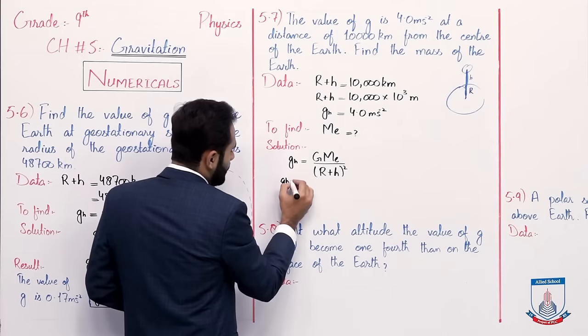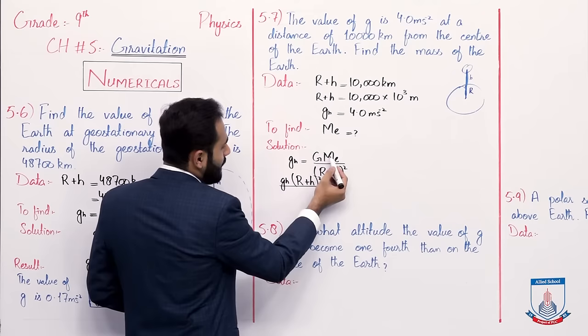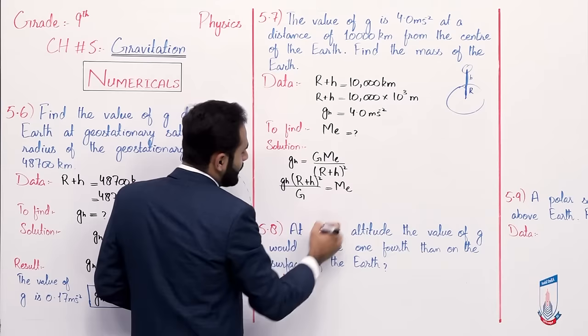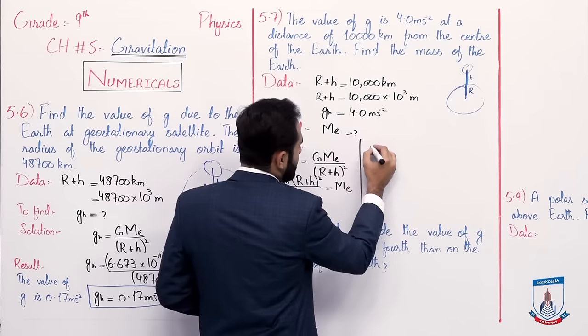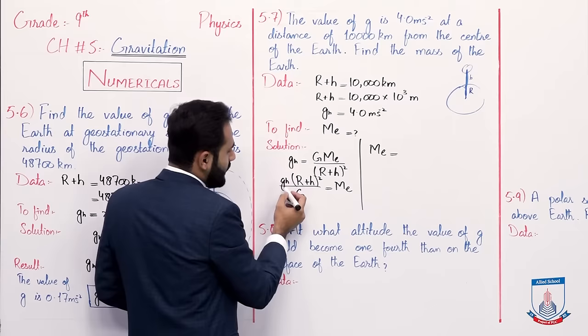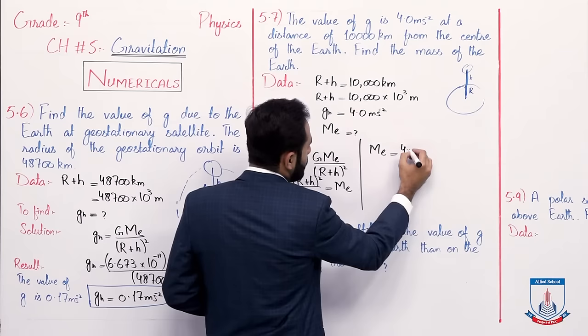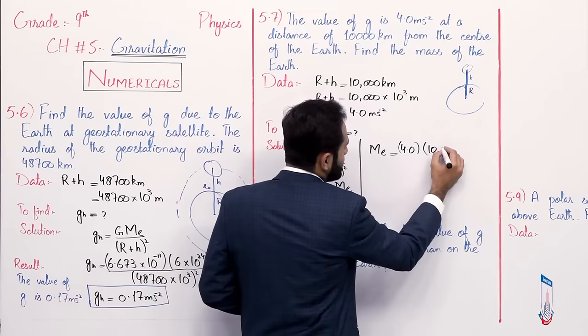g_h multiplied by (r plus h) whole squared, divided by G, gives mass of Earth. Mass of Earth equals g_h, whose value is 4.0, times (r plus h) whole squared — that is 10,000 multiplied by 10 to the power 3, whole squared.